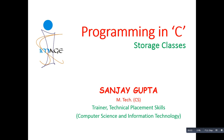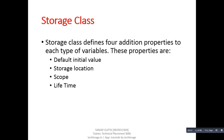Hello friends, I am Sanjay Gupta. In this tutorial I am going to discuss about storage classes in C. A storage class defines four additional properties to each type of variable. These properties are: default initial value, storage location, scope, and lifetime. The default initial value means when we declare a variable, the compiler automatically initializes a particular value to this variable according to its storage class. Storage location means where the variable will occupy memory space so that it can store a particular value.